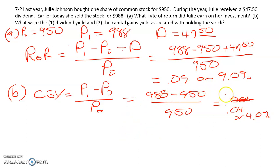One thing to note here, the capital gains yield and the dividend yield have to add up to the rate of return. So we could just say, well, we know that capital gains yield is 4% and the rate of return is 9%, so then our dividend yield has to be 5%. But let's prove it to ourselves.